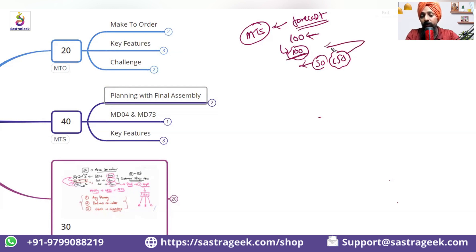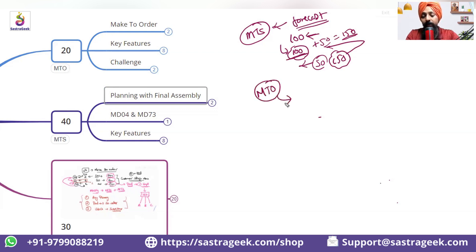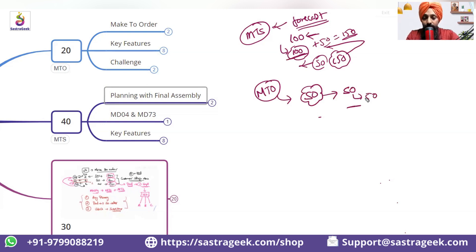If your forecast was 100 but you got a sales order of 150, you should be producing 100 plus 50, which is 150. If you go to classic make-to-order, strategy 20, it completely depends on your sales order. If no sales order exists, it does not produce based on the forecast.